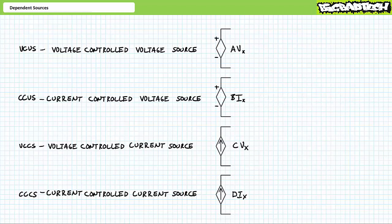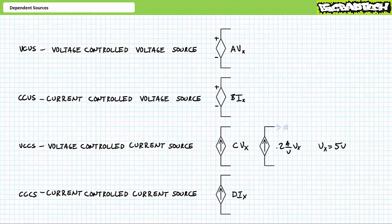Three: voltage-controlled current sources, where output current is proportional to some constant C times the controlling voltage value Vx. Constant C has dimensions of amps per volt. For example, consider a voltage-controlled current source where output is 0.2 amps per volt times Vx, and Vx happens to be 5 volts. The output would be 0.2 amps per volt times 5 volts, or 1 amp. If the controlling voltage dropped to 4.5 volts, the output would be 0.2 times 4.5 volts, or 900 milliamps.